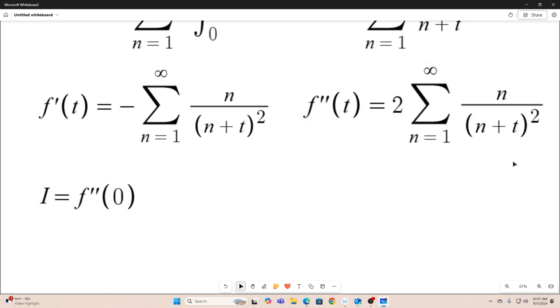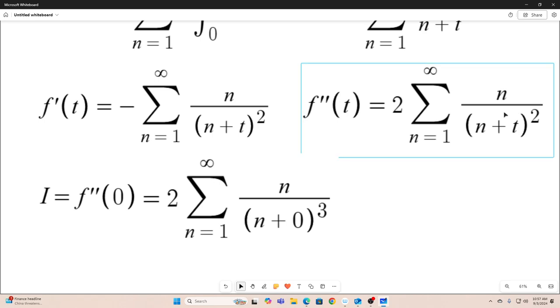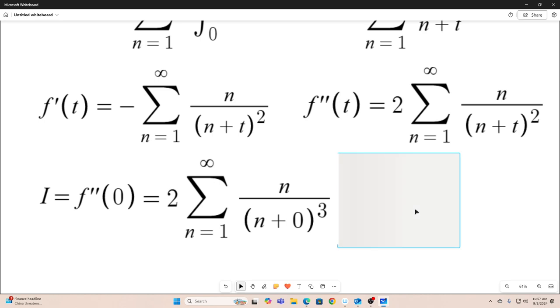We know from before that I is equal to f double prime of zero. So all we have to do is plug in zero and we have our answer. So that's equal to two times the sum as n goes from one to infinity of n over n plus zero all cubed. Because don't forget, we replaced our t with a zero.